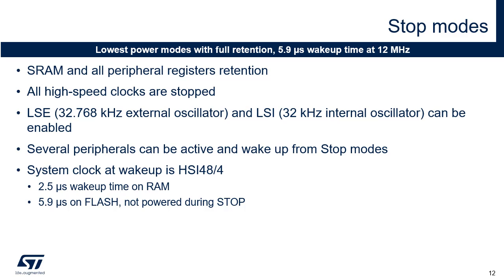Stop mode is the lowest power mode with full retention and only a 2.5 microsecond wake-up time to run mode at 12 MHz. The contents of SRAM and all peripheral registers are preserved in stop mode. All high-speed clocks are stopped. The 32.768 kHz external oscillator and 32 kHz internal oscillator can be enabled. Several peripherals can be active and wake up from stop mode. The system clock on wake-up is the internal high-speed oscillator at 12 MHz, with only a 2.5 microsecond wake-up time from RAM or 5.9 microseconds from flash. The divider configuration to SISCLK is kept upon wake-up.